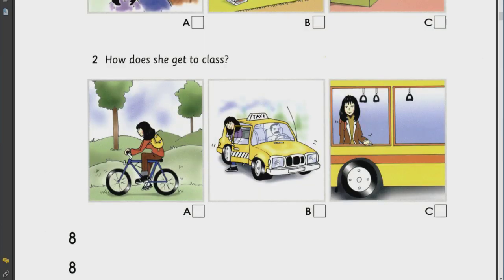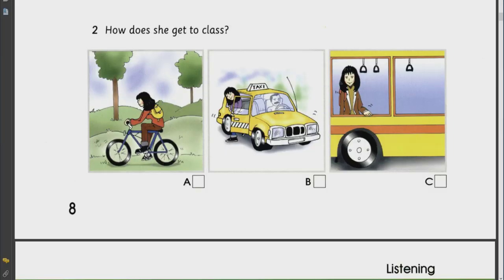Two. How does she get to class? Does your sister go to class by bus? No. She doesn't. There's no stop in her street. And she has classes early in the morning. So. What does she do? Does she take a taxi? No. That's too expensive. She rides her bike through the park.